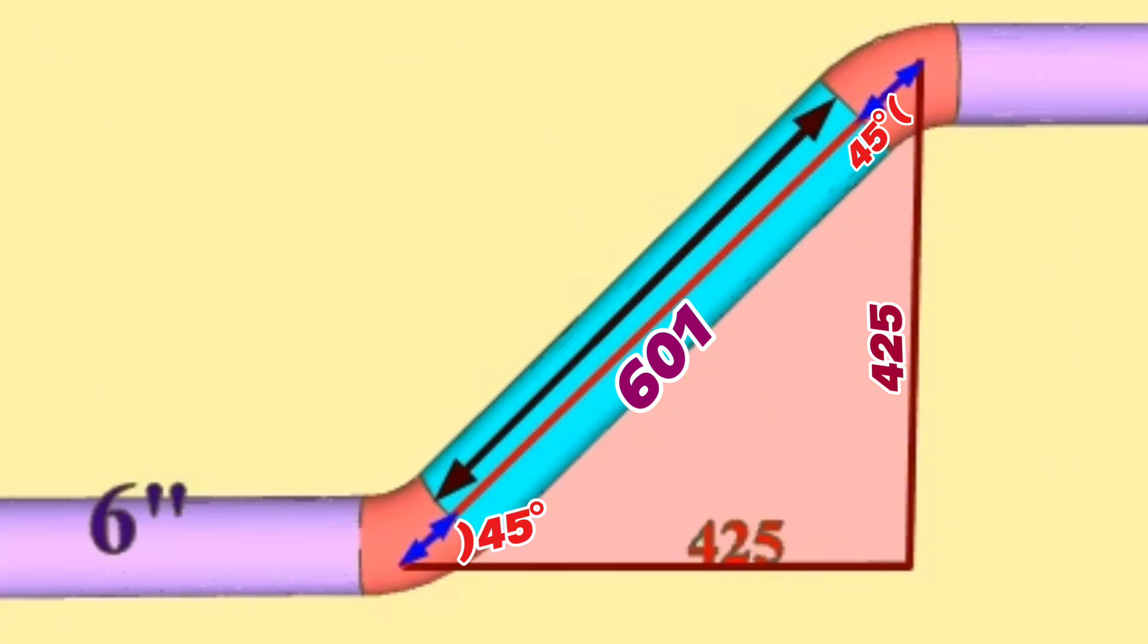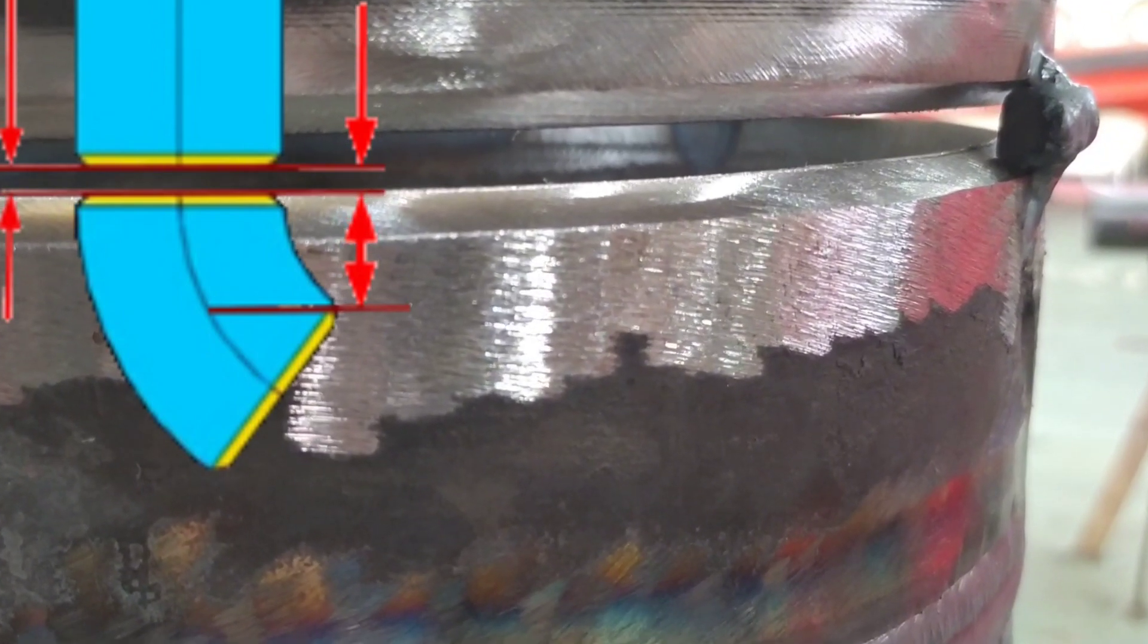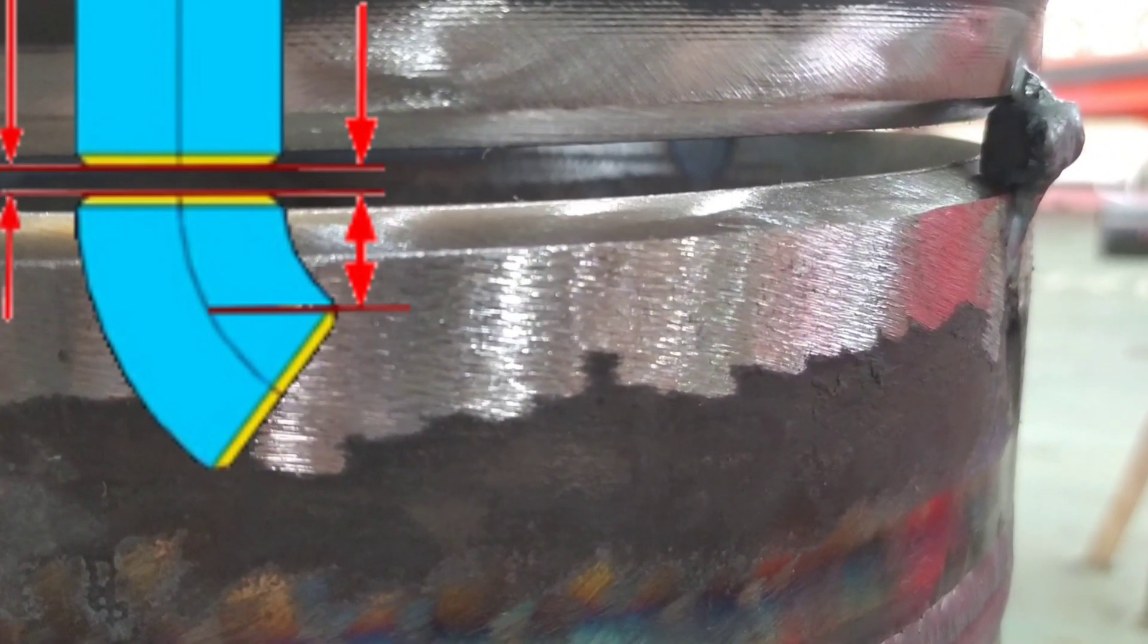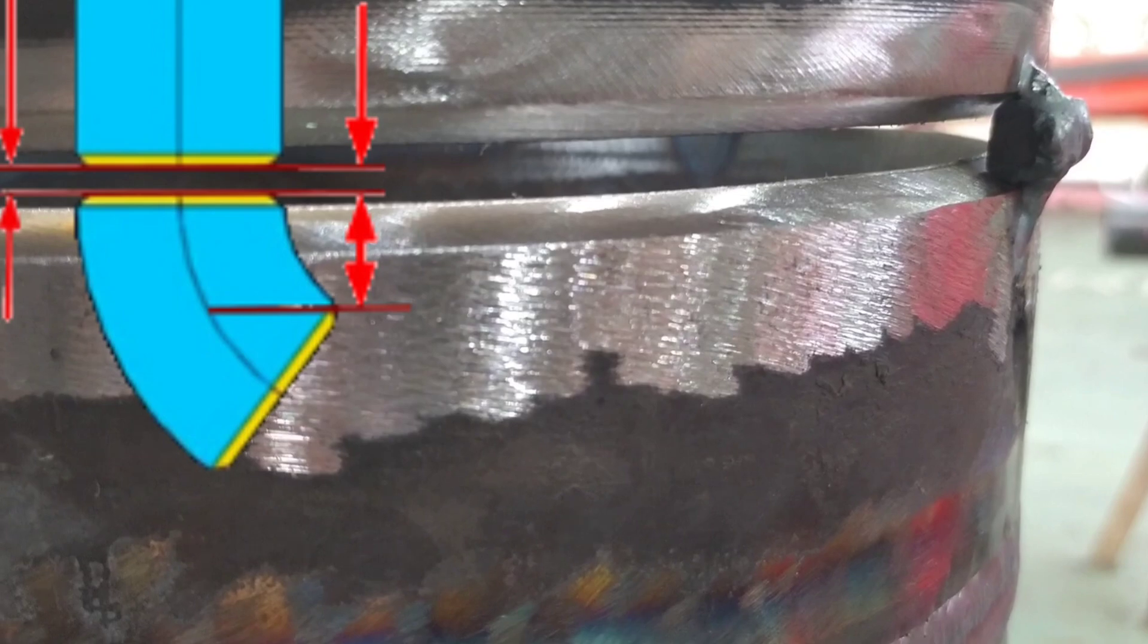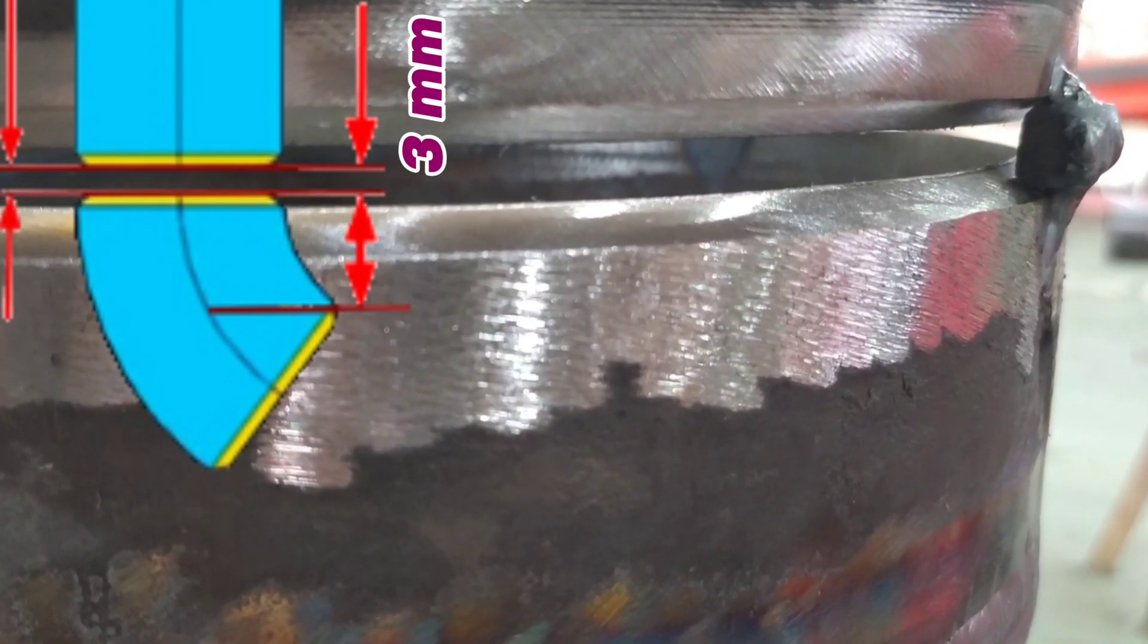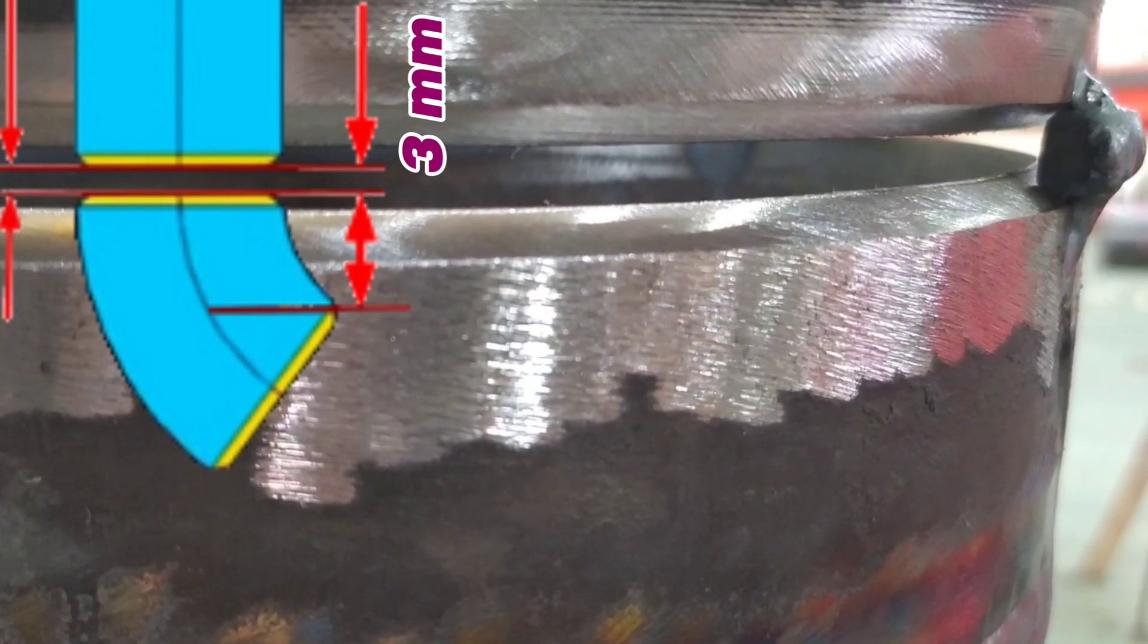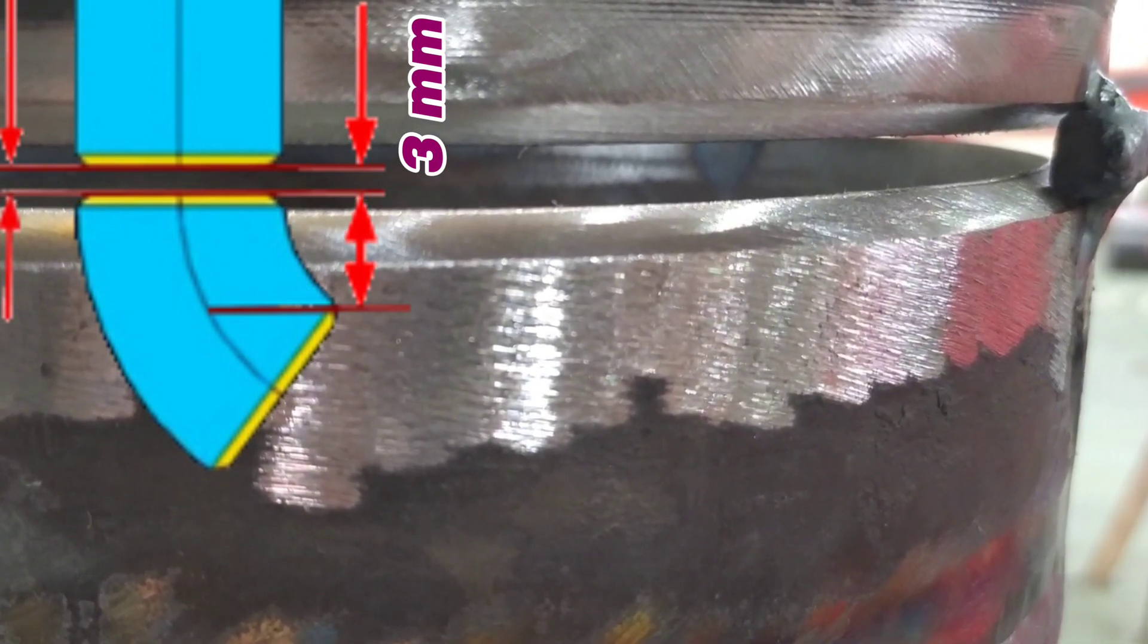Now, after finding the lengths of the 45-degree elbow, let's look at the fitting process of the elbows to the pipe in this pipeline. During fit-up, a gap is opened between the elbow and pipe to be welded, approximately 3 to 4 millimeters. Having this gap is for better root welding. We should take these gaps into account when calculating the length of the blue color pipe section.